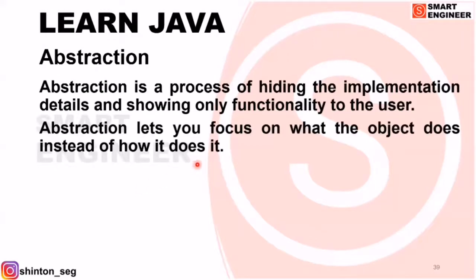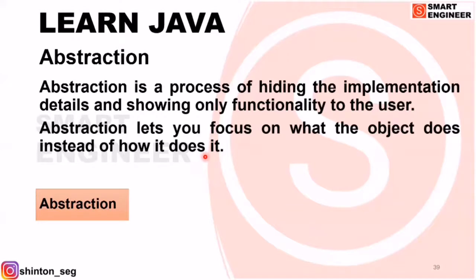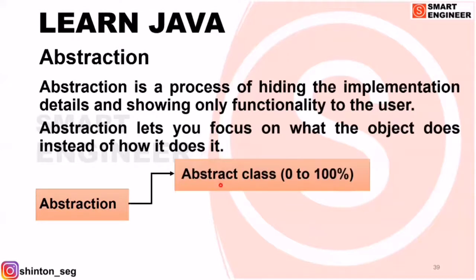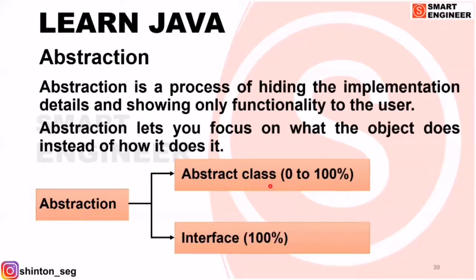In abstraction, it lets you focus on what the object does, instead of how it does it. In Java, we can achieve abstraction using two ways. One is by using an abstract class — if you use an abstract class, partial abstraction is possible. Another way to achieve abstraction is using an interface. By using an interface, we can achieve 100% abstraction.